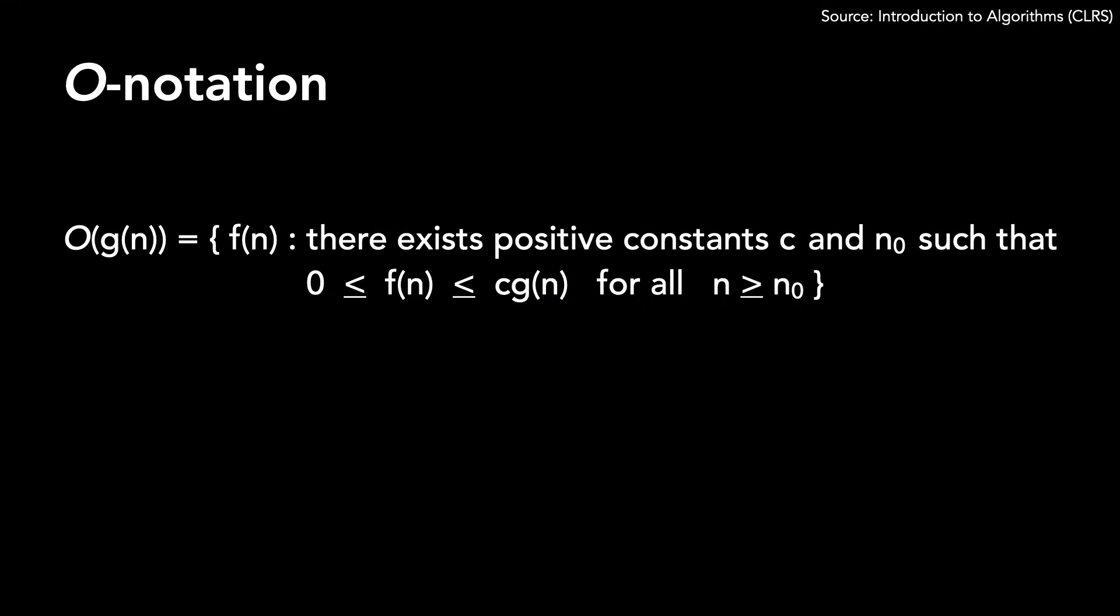Let's move on to O notation, often referred to as big O notation. We say that O(g(n)) means there is a function f(n) such that there exist positive constants c and n0, where 0 ≤ f(n) ≤ c·g(n) for all n ≥ n0.